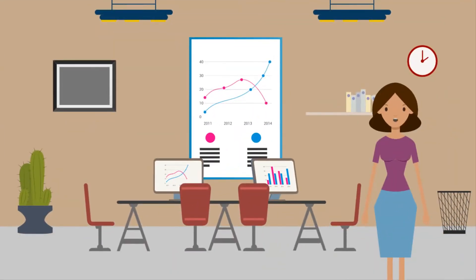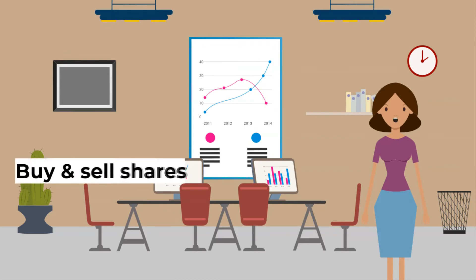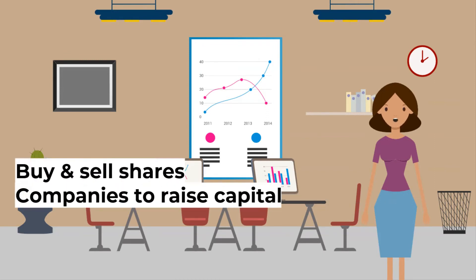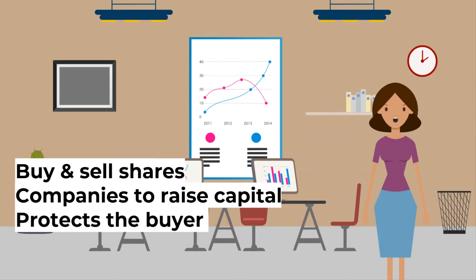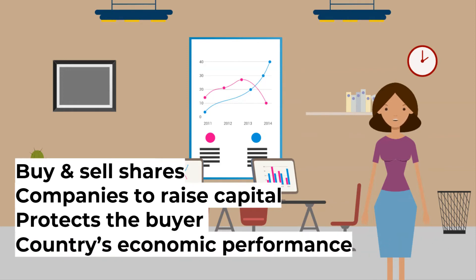What are the functions of a stock exchange? It allows the buyer to buy and the seller to sell shares. It allows a company to raise capital by selling shares. It protects the buyer, because not just any company can sell shares to the public — you must be licensed. It also indicates the country's economic performance.